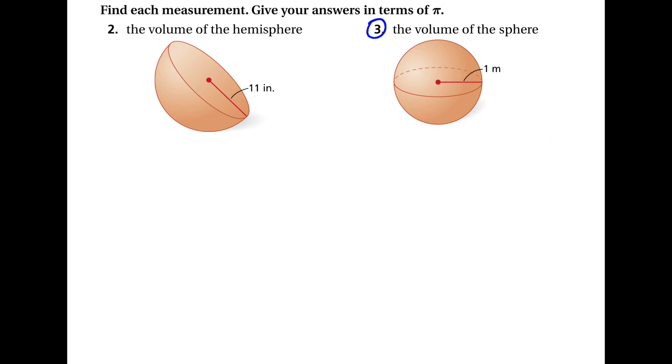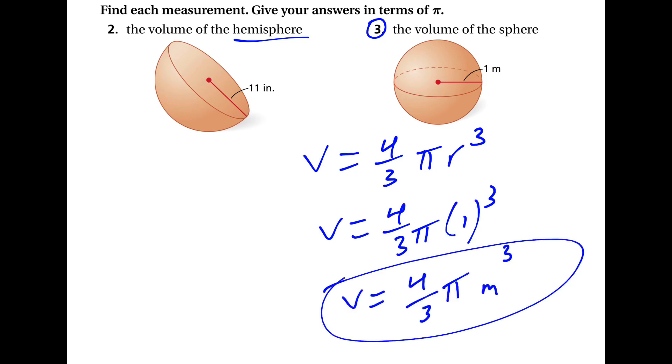So we're going to skip over number 2, but the volume of a hemisphere would just be take the whole volume and cut it in half. Here we are at number 3. To find the volume of the sphere, we're going to use our formula. The volume is equal to four-thirds pi r cubed, and our radius here is 1. So if we take 1 times 1 times 1, it doesn't change. And our answer is four-thirds pi meters cubed.